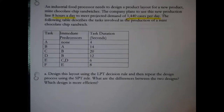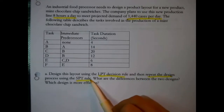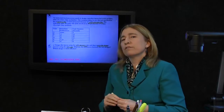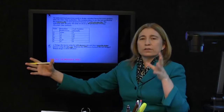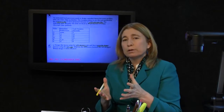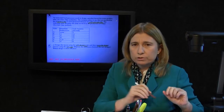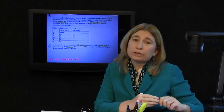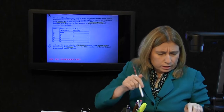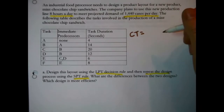The question asks us to design the layout using the longest processing time decision rule, and then repeat the design using the shortest processing time rule. In reality, this is very often done — an assembly line needs to be designed and several different designs are generated by swapping out the rules. We've been asked to compare two designs, so we have to generate those designs first.